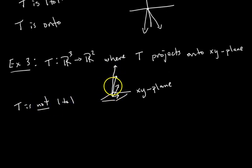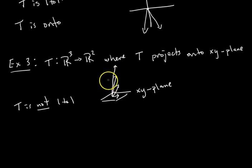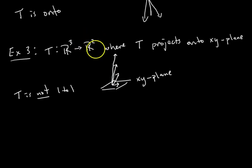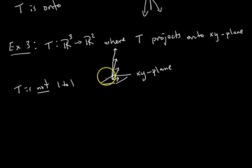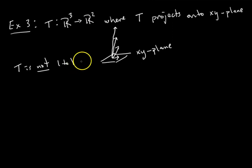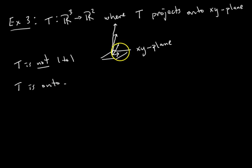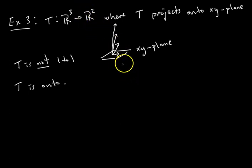But is it onto? This is an interesting case, because our previous projection was not onto. Now, since our output space is R2, we can get any vector in R2. We could pick any vector in the xy-plane and find a corresponding input that gets us there by projecting onto it. Since we can get any vector in R2 as an output, T is onto. The range is all vectors on the xy-plane, and the co-domain is R2, so the range equals the co-domain — the transformation is onto.